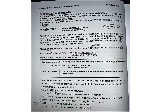Concentration and molarity. A chemist must often determine the solution concentration — the amount of solute in a solution. The most common measurement of concentration in chemistry is molarity. A solution's molarity tells us the number of moles of solute per liter of solution. Molarity equals moles of solute per volume of solution. An aqueous solution of known molarity is prepared by adding solute to a known volume of solvent. We can easily calculate the moles of solute needed to achieve a desired molarity by manipulating equation 1.